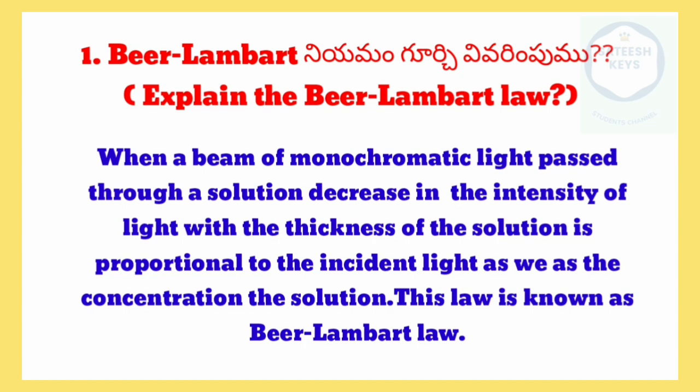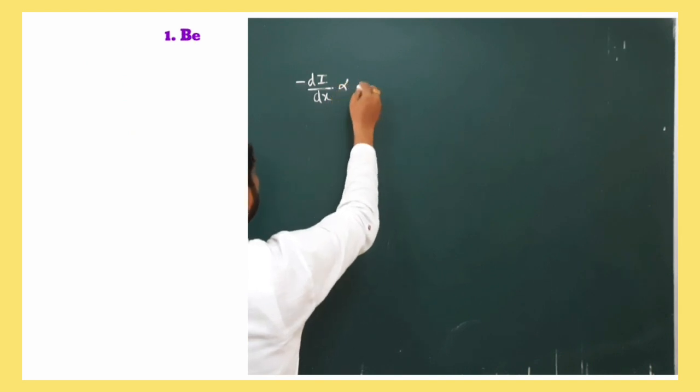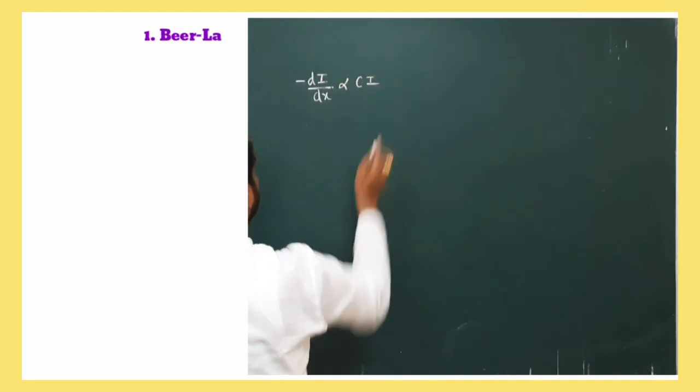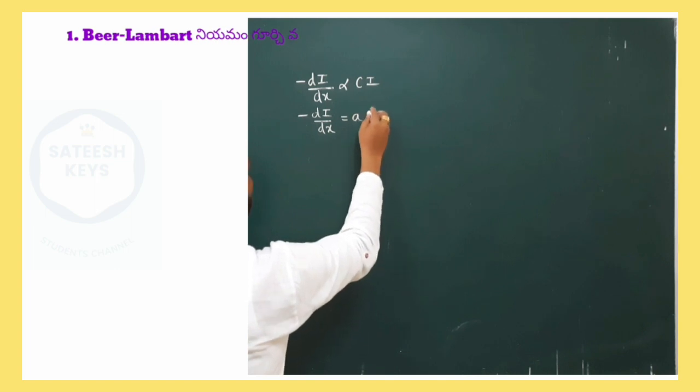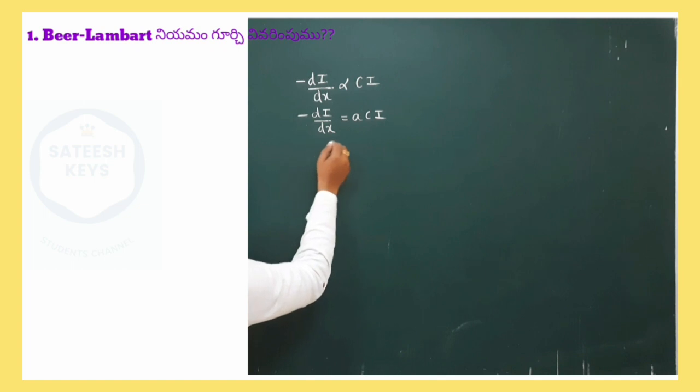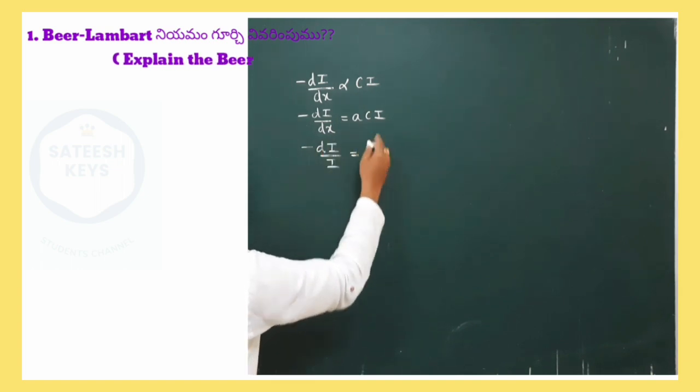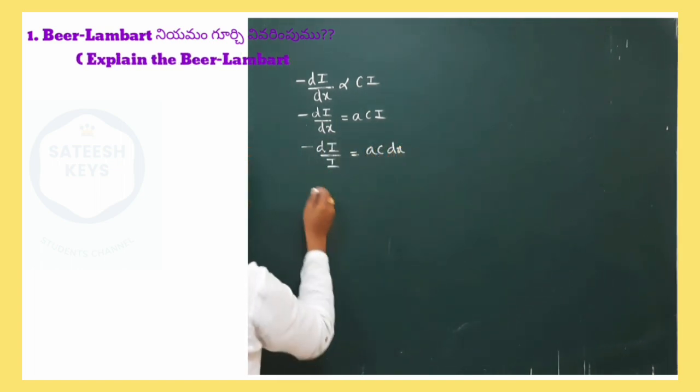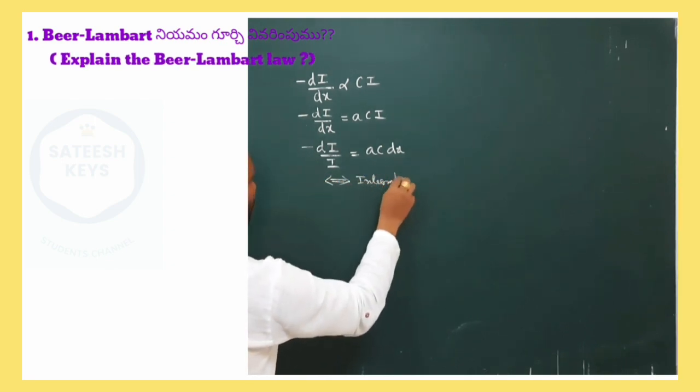Mathematically, the law may be stated as: minus di by dx proportional to ci. So this equation minus di by dx is equal to aci. Here a is a proportionality constant. Writing same terms on one side: minus di by i is equal to acdx. Apply integration on both sides.